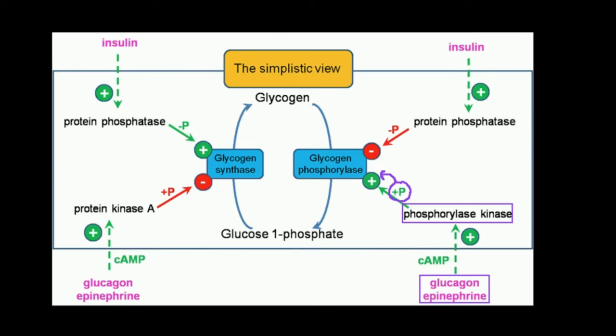That tends to be stimulated by insulin. The way I remember it is glycogen phosphorylase has to have a phosphate — the phosphorylase has to have a phosphate. Now for glycogen synthase.